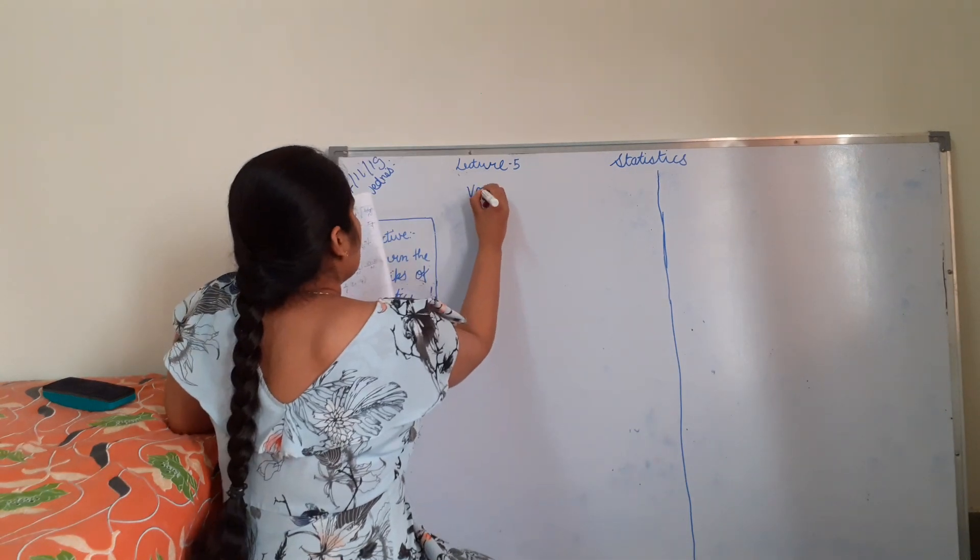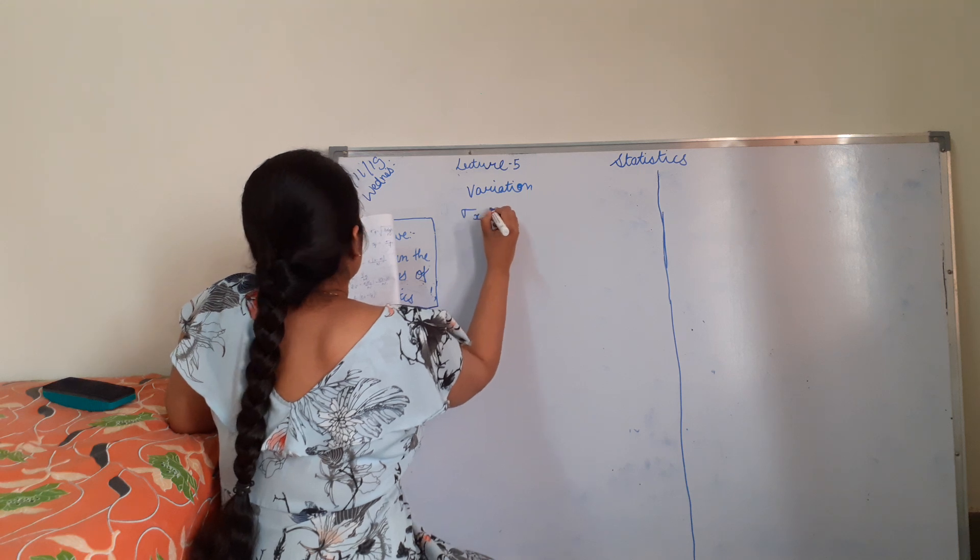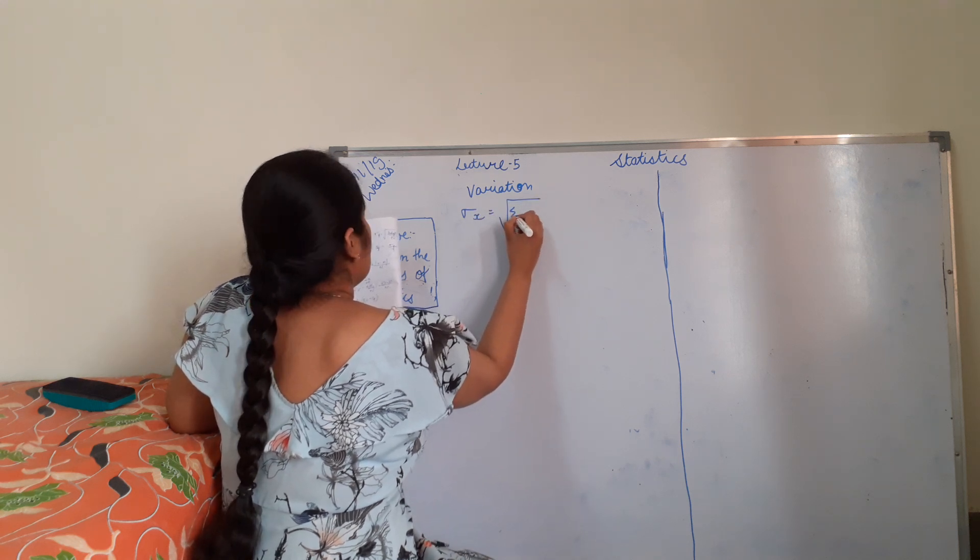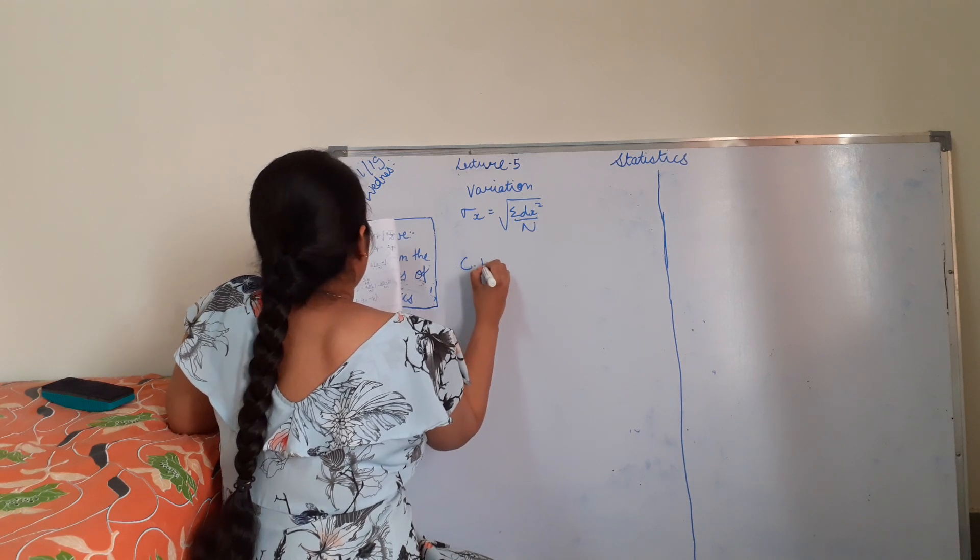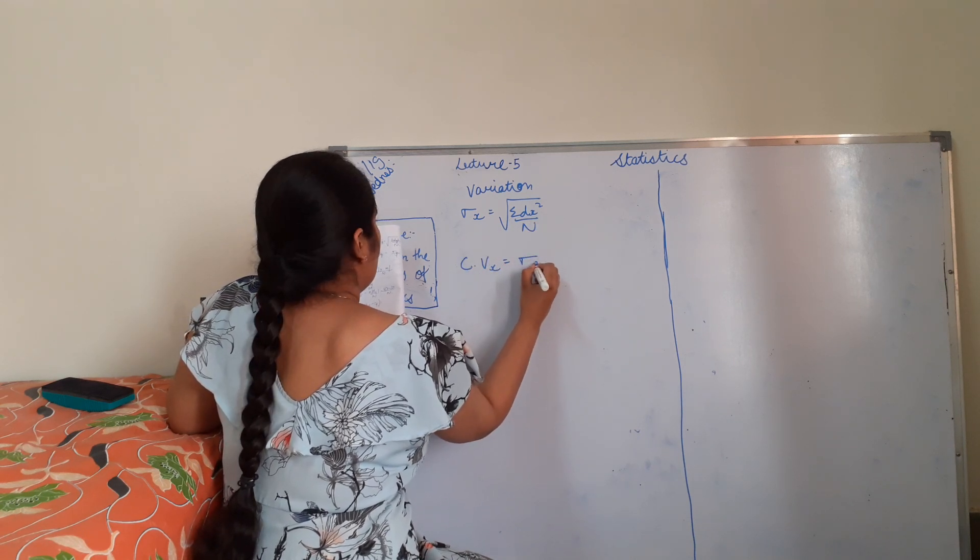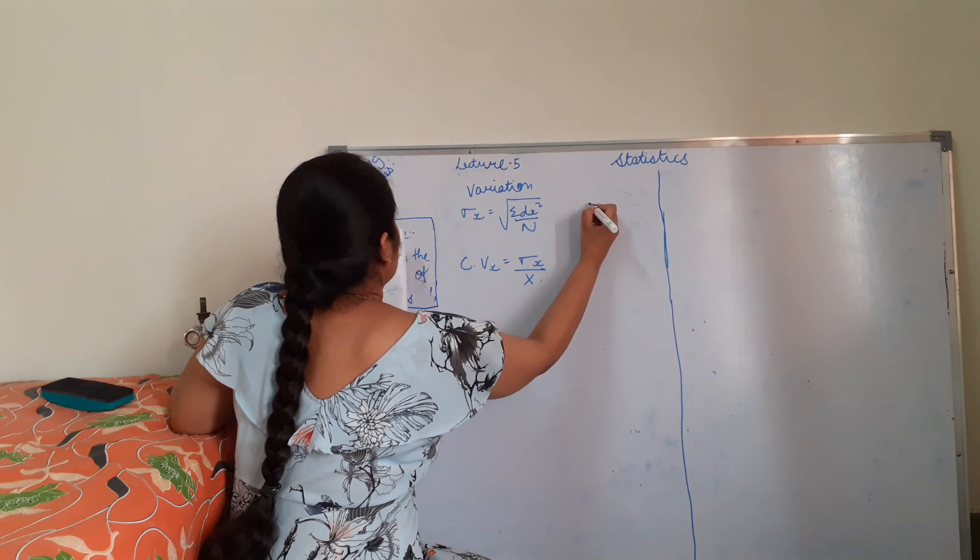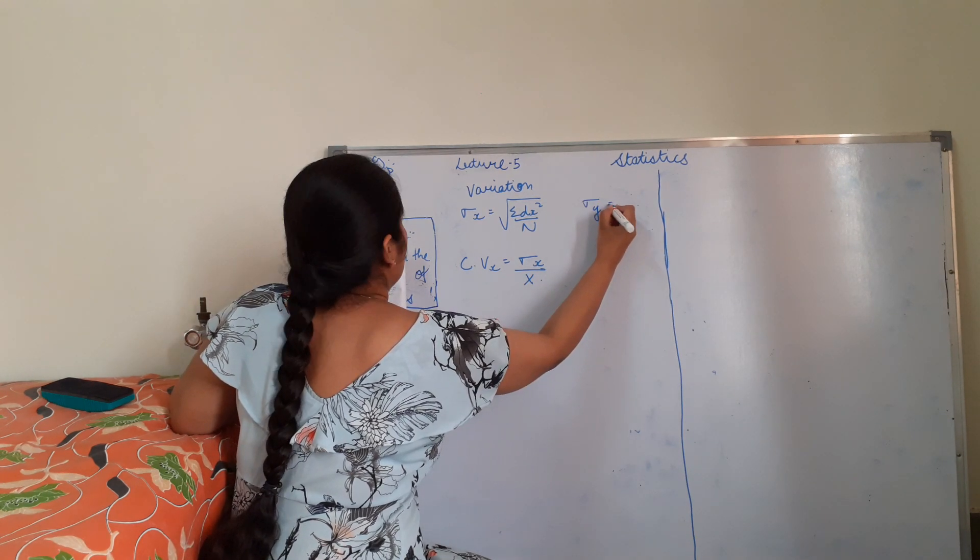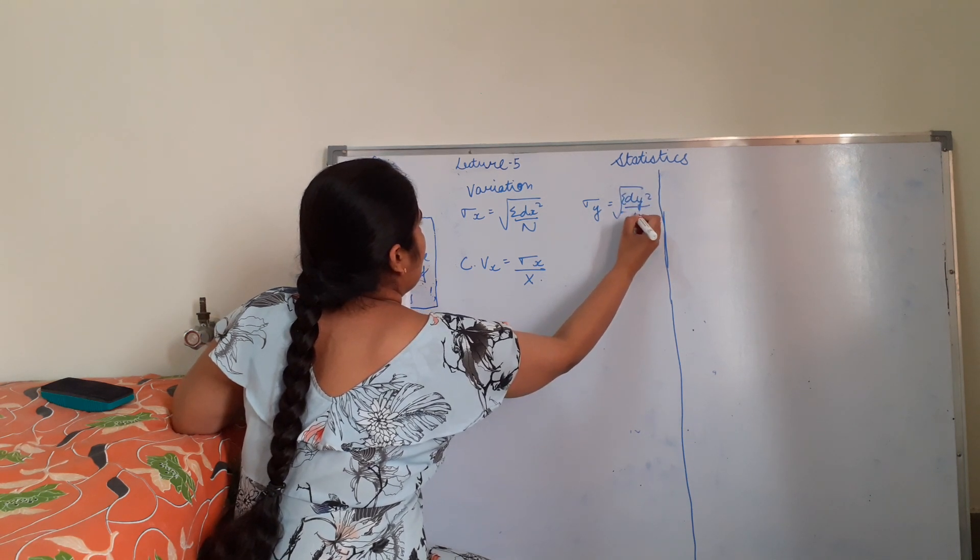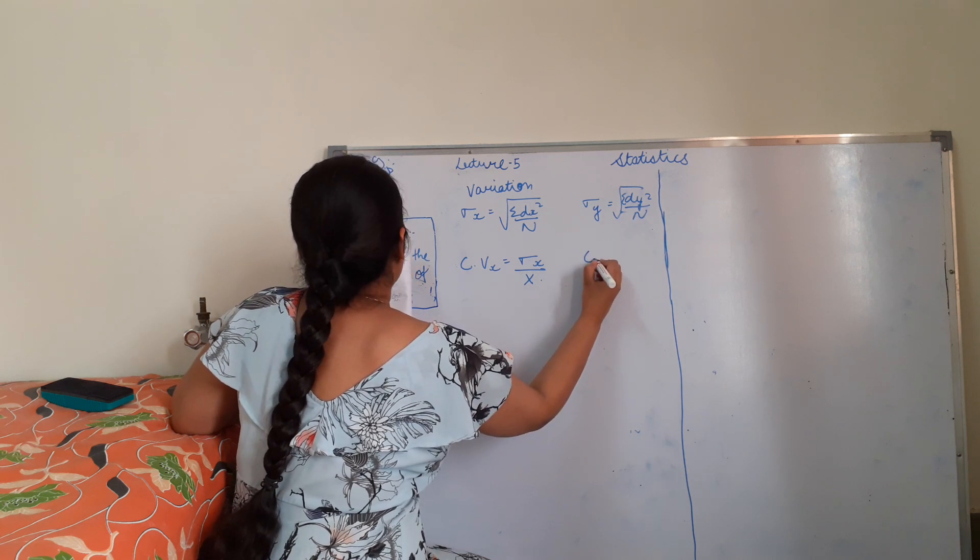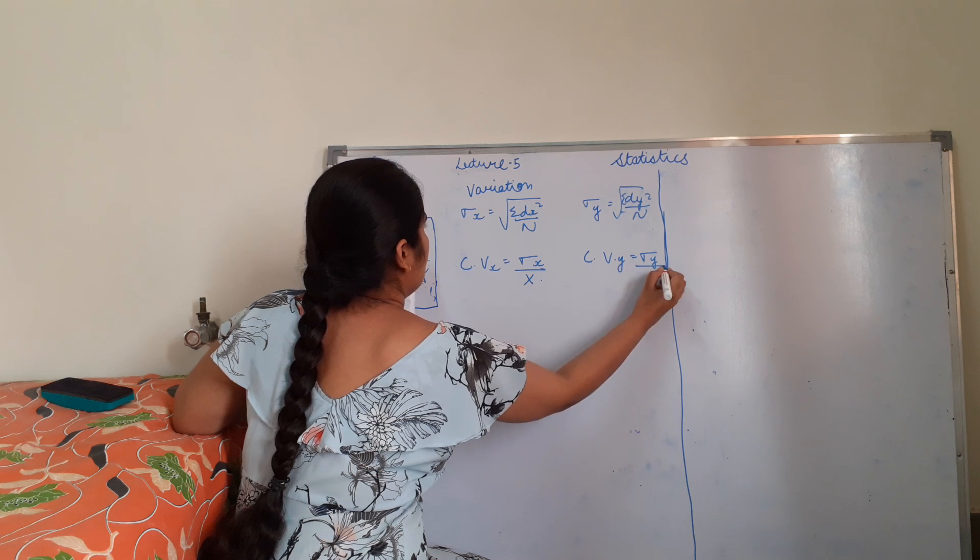So we are on point variation. Variation in terms of x is equal to summation of dx square by n where coefficient of variation in terms of x is this summation of dy square by n where coefficient of variation in terms of y is this.